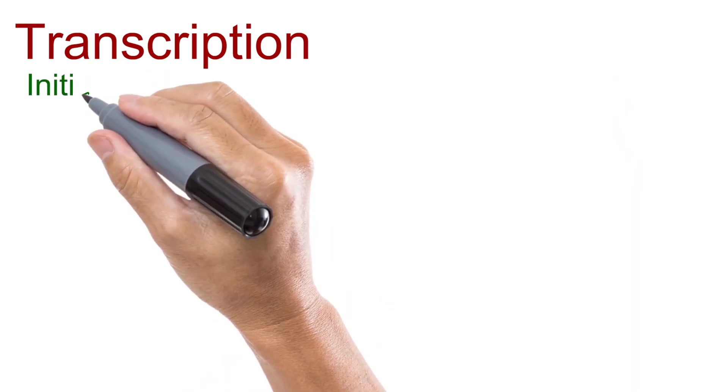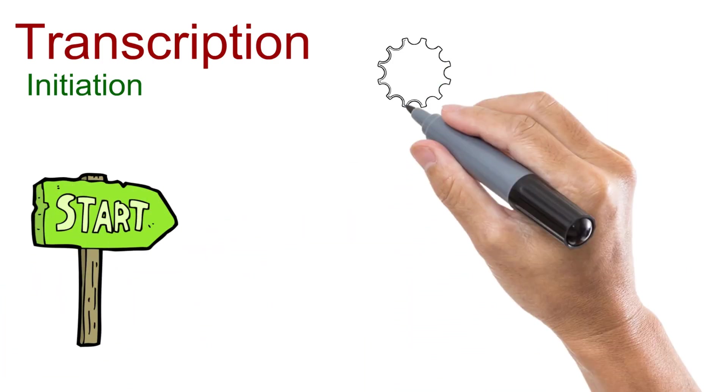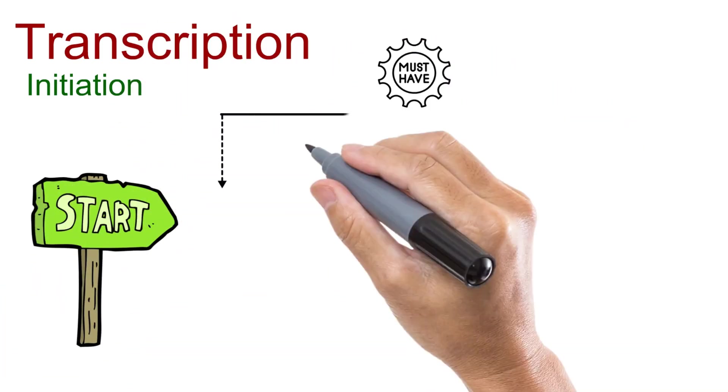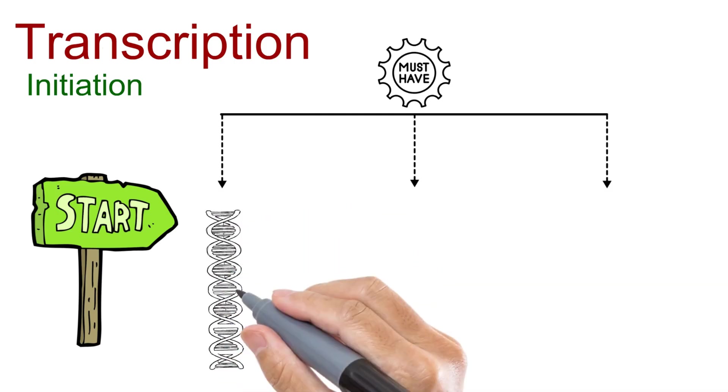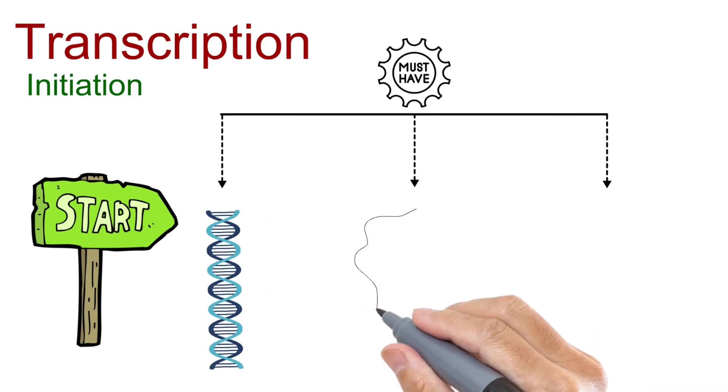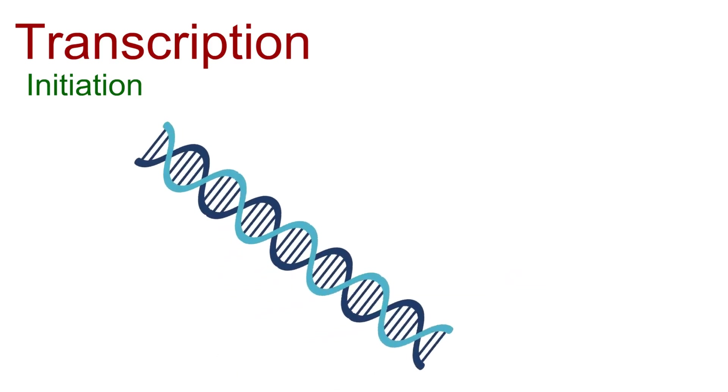Initiation, the first step of transcription. This is where the process actually begins. But what do we need for it to happen? Three main things: DNA, the blueprint from which the gene has to be copied; RNA polymerase, the enzyme that does the copying; and nucleotides, the building blocks for the new RNA strand.